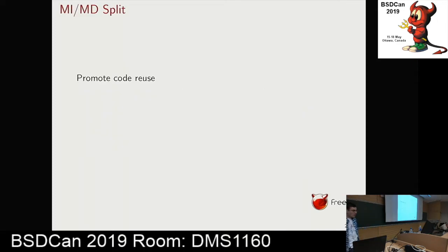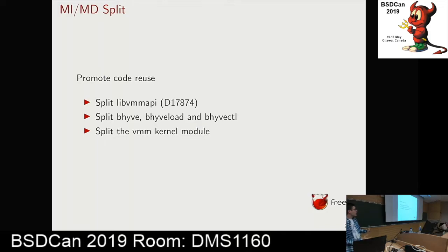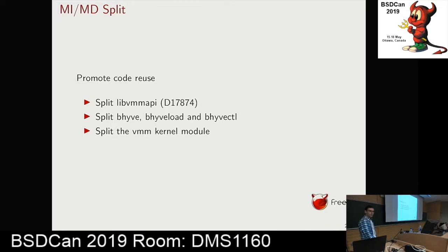When BHyve for ARMv7 was under review, one of the main issues raised was that it duplicates a lot of code from BHyve for AArch64. By splitting BHyve code into machine-independent and machine-dependent parts, we ensure other hypervisors — including BHyve for ARMv8 — can benefit from code common with BHyve for AArch64. I started by modifying the VMM API and have a patch under review. I then plan to split BHyveload and BHyvectl, and refactor the VMM kernel module for BHyve for AArch64.